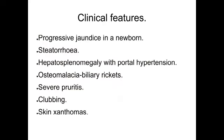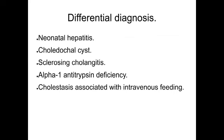Coming to clinical features of biliary atresia: it presents as progressive jaundice in the newborn, steatorrhea, hepatosplenomegaly with portal hypertension, osteomalacia also called biliary rickets, severe pruritus, clubbing, and skin xanthomas. Differential diagnosis includes neonatal hepatitis, choledochal cyst, sclerosing cholangitis, alpha-1 antitrypsin deficiency, and cholestasis associated with intravenous feeding.